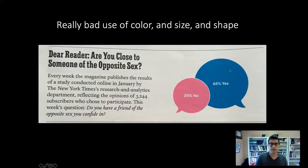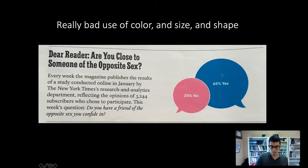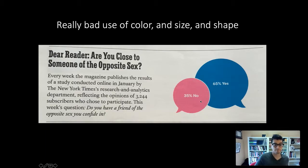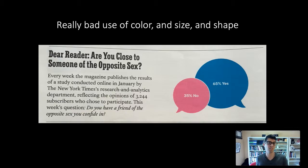The other problem is the relative sizes of the yes and no bubbles. We've got 65% saying yes, so we expect this bubble to be bigger than the no, which is only 35%. But if we actually calculate the area — measuring the diameter of that circle and using the formula for calculating area — this bubble is actually 2.4 times larger than the other bubble in terms of area. But comparing 65% to 35%, this is only 1.8 times bigger. So the scale of the bubbles is not correct, and the scale of the bubbles is just hard for us to determine anyway.